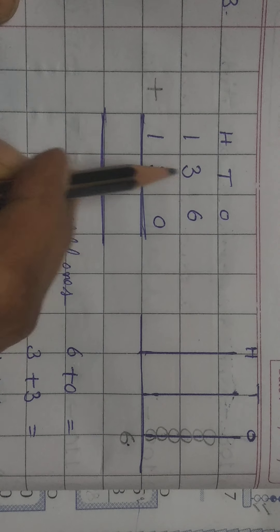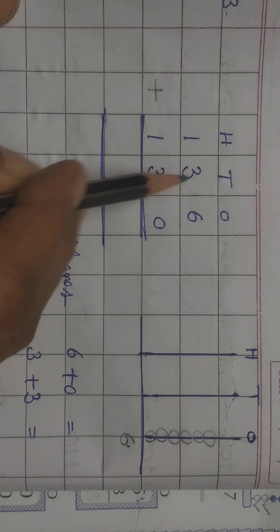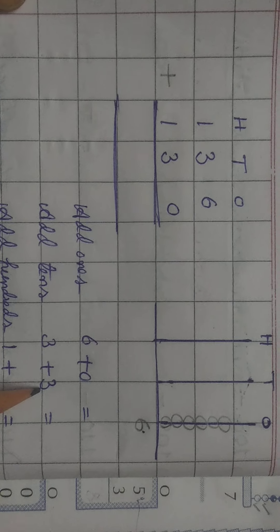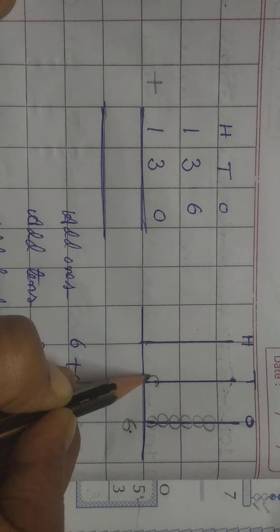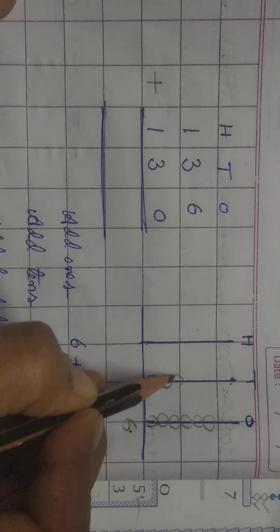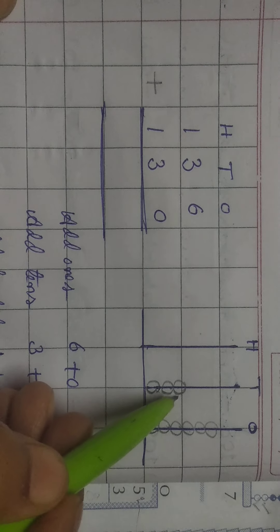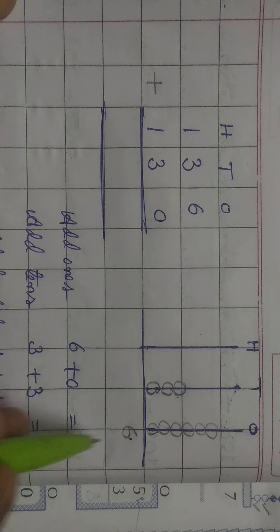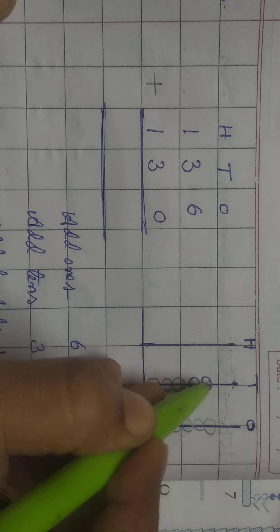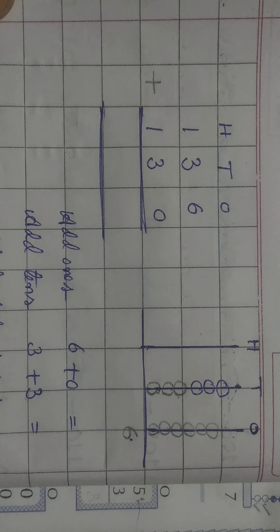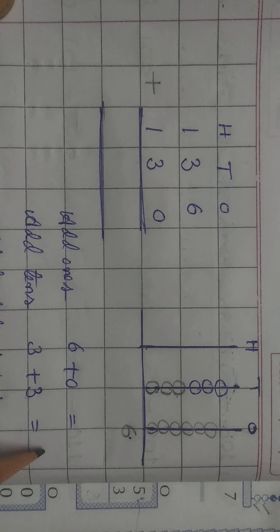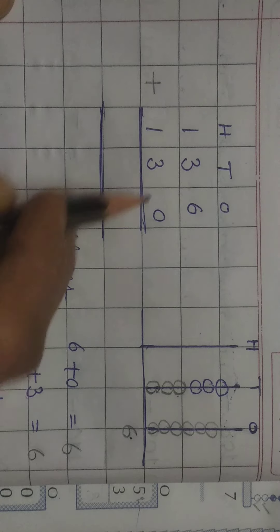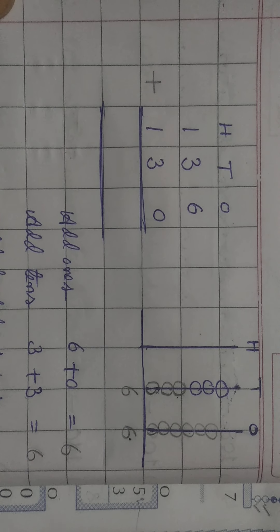Now, we will add tens numbers. 3 plus 3. 3 plus 3 is how much, dear children? We will draw the beads on the abacus. 1, 2, 3. These 3 beads are for first 3. For second 3, 1, 2, 3. So, children, total how many beads are there? 1, 2, 3, 4, 5, 6. It means 3 plus 3. 3 plus 3 is equal to 6. Understand?